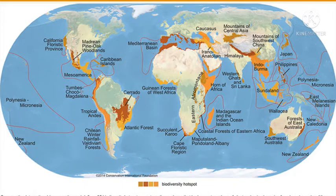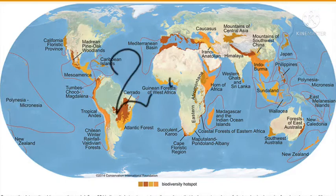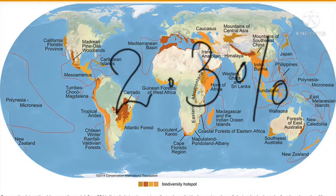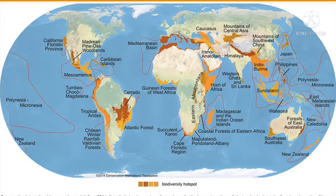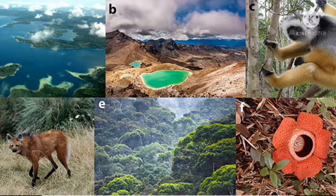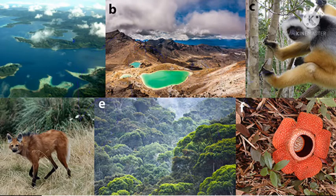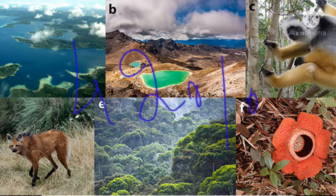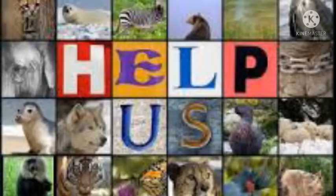Out of these hotspots, most of them lie in tropical forests. Almost 2.3 percent of the land surface of Earth is represented by these hotspots. They also comprise around 50 percent of the world's most common plant species and 42 percent of terrestrial vertebrates prevalent.